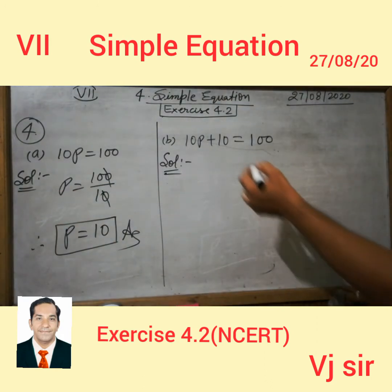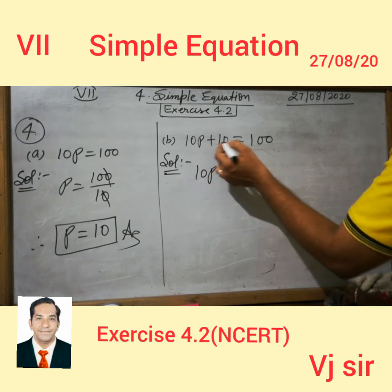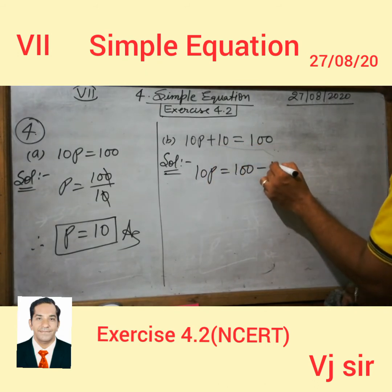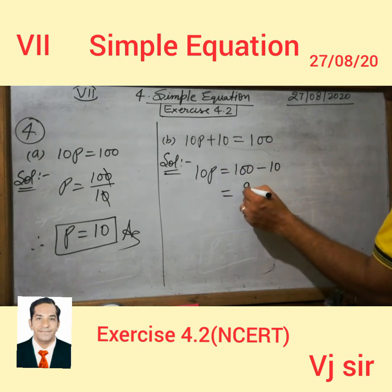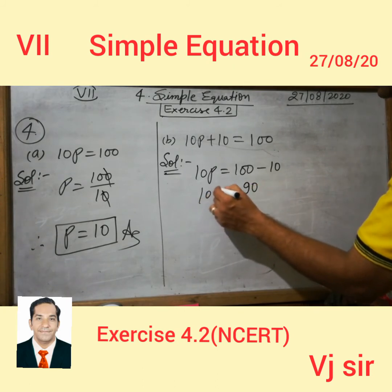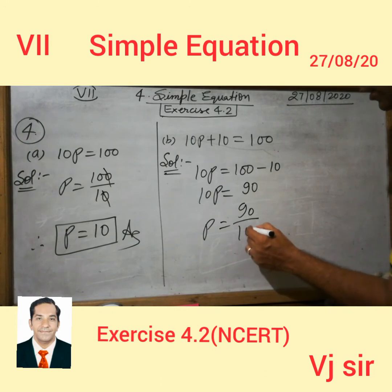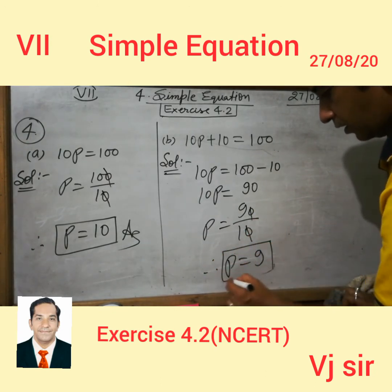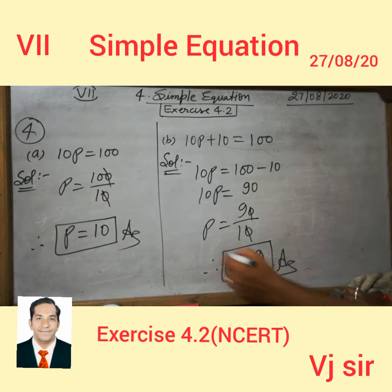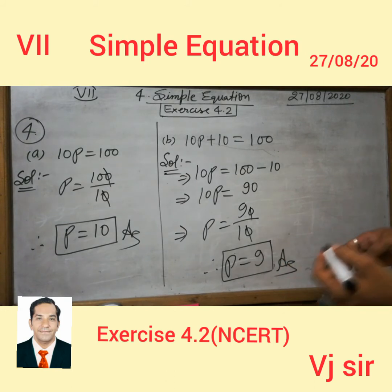Here, 10P is on its place. It will move to the right-hand side and the sign will be changed. So 100 minus 10 is 90. With 10P, the value of P is 90 upon 10, which equals 9. Therefore, the value of P is equal to 9. It is so simple. This is the answer.